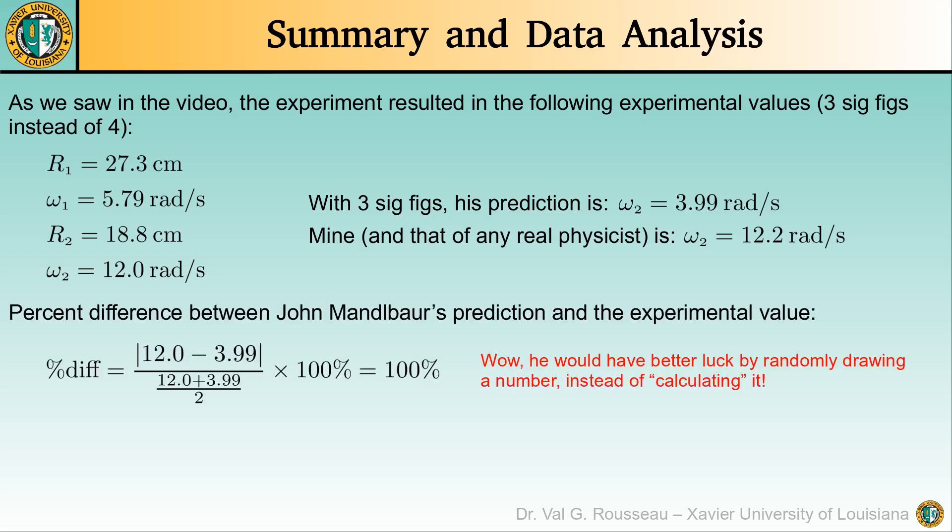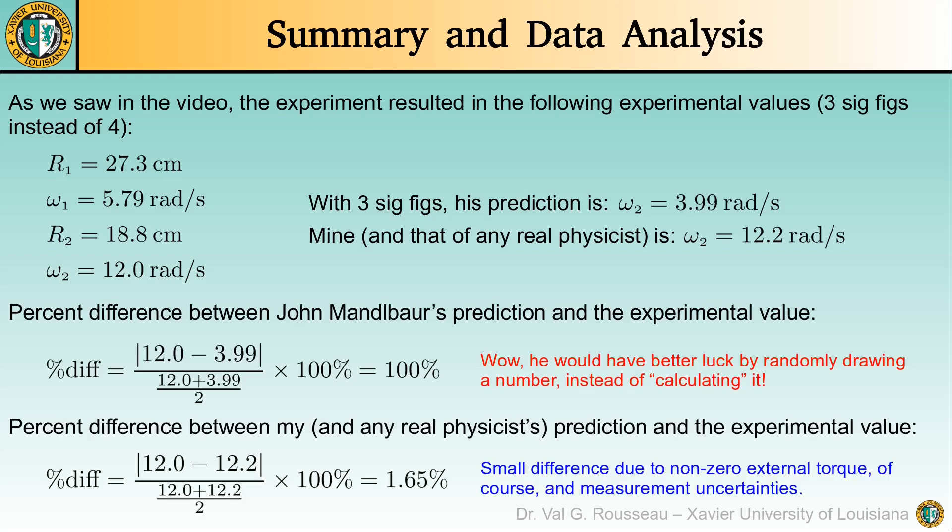If we calculate the percent difference between his predicted value and the experimental one, we get exactly 100% difference. He would probably have had better success by drawing a value at random. On the other hand, the percent difference with my predicted value is only 1.65 percent. Of course, the small difference is mostly due to the small but non-zero air drag and also the uncertainties on the measurement of the string length and the angle.